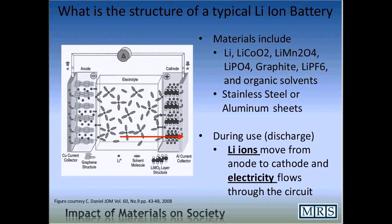In doing so, the lithium ions need to rejoin the electrons they lost. Those electrons go through a circuit, which passes through, say, your cell phone, and then goes back into the cathode where they recombine with the lithium and the lithium is reduced. In this way, you can actually generate an electrical current in a mobile device.